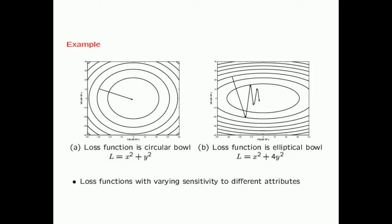This is what I meant when I said that the direction of steepest descent is not the correct direction in the longer term for most loss functions. In general, when a loss function has very different sensitivity to different attributes, this problem of bouncing along is more likely to happen. Even in this very simple case of elliptical bowls, varying sensitivity to different attributes causes slower convergence.